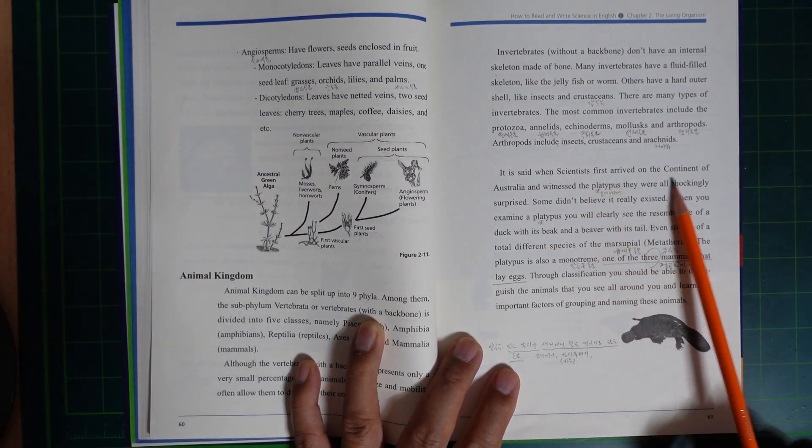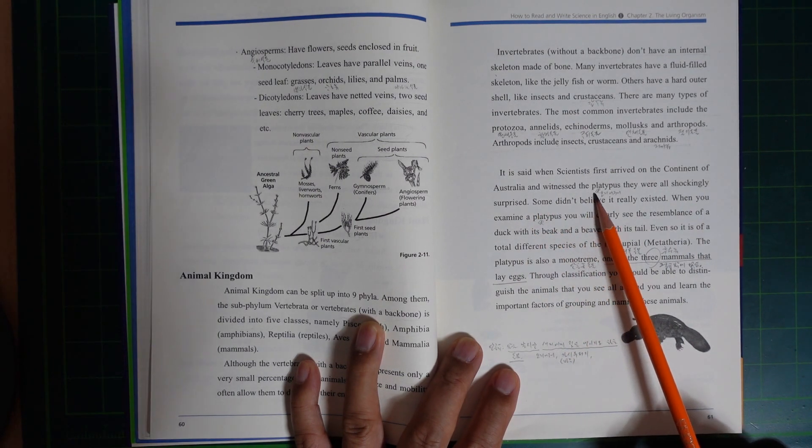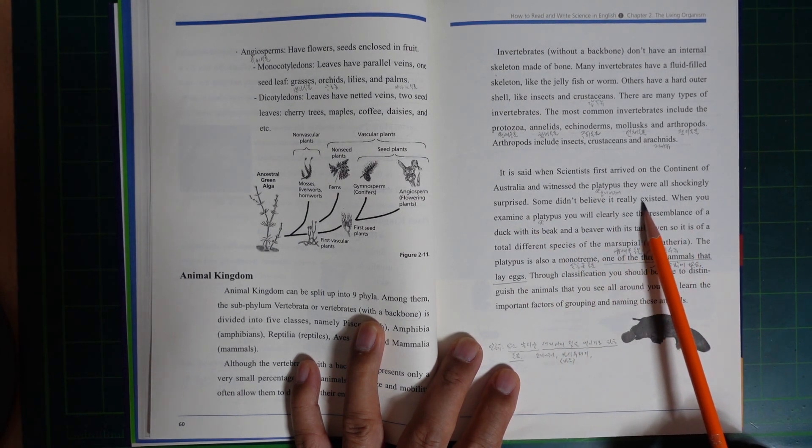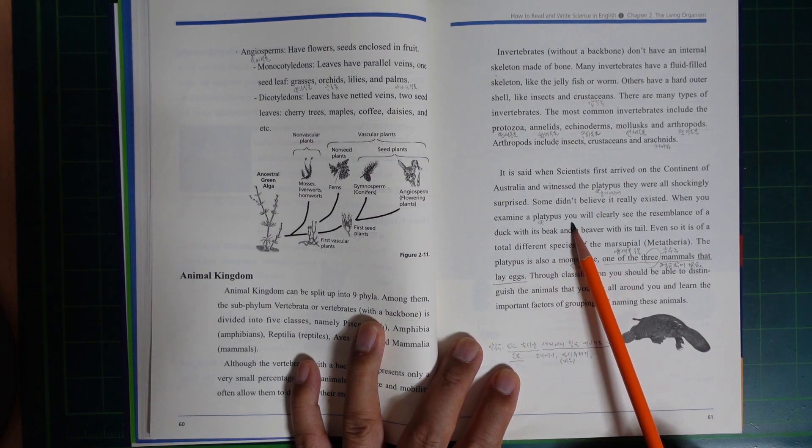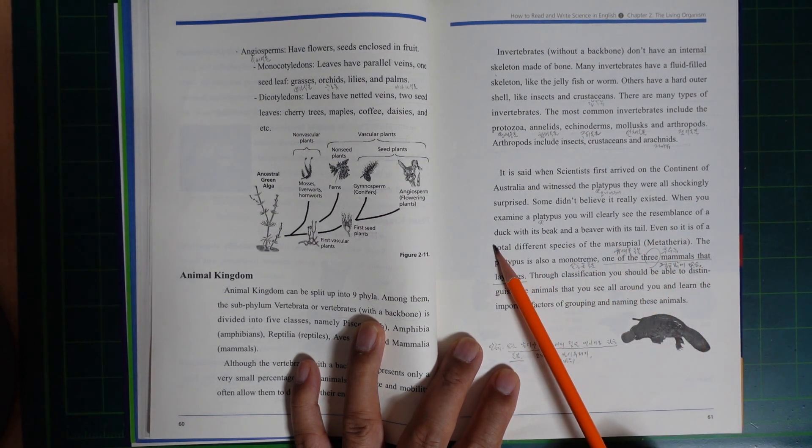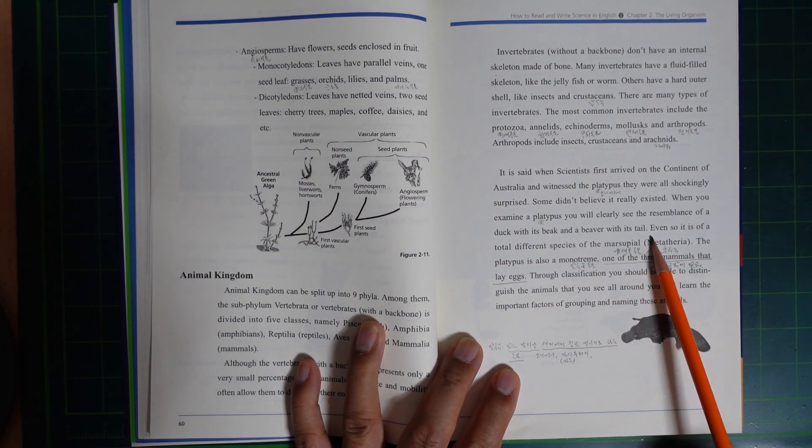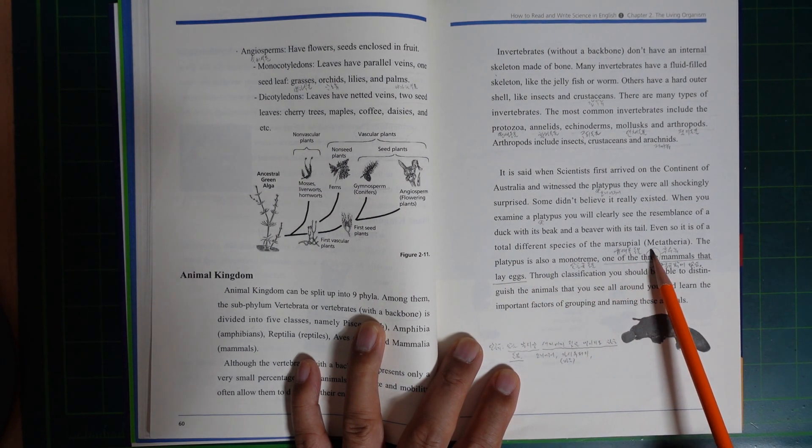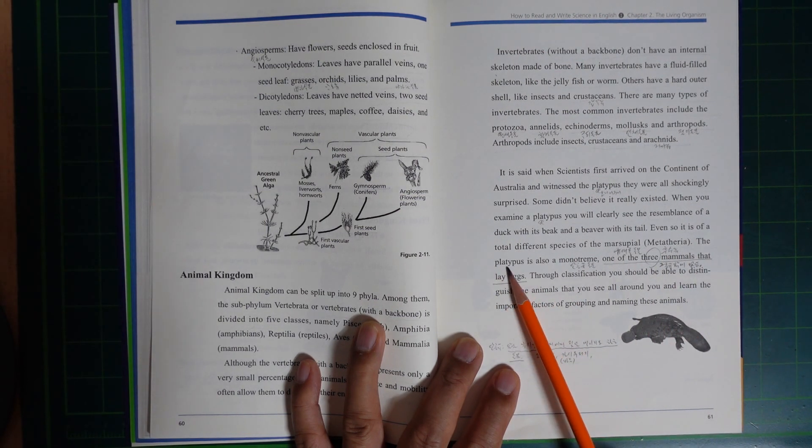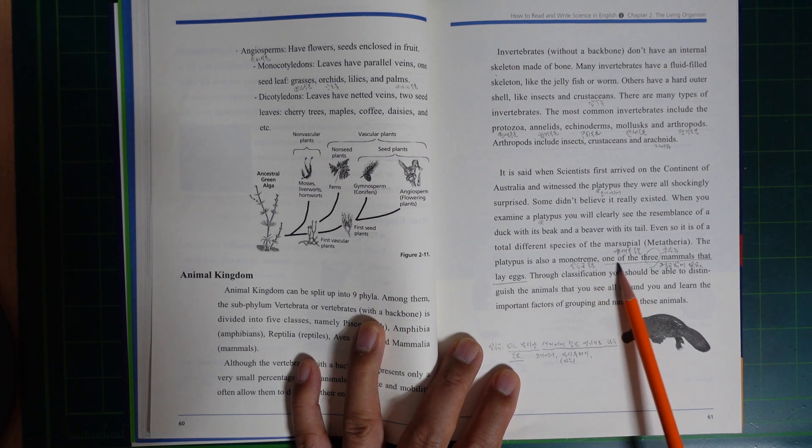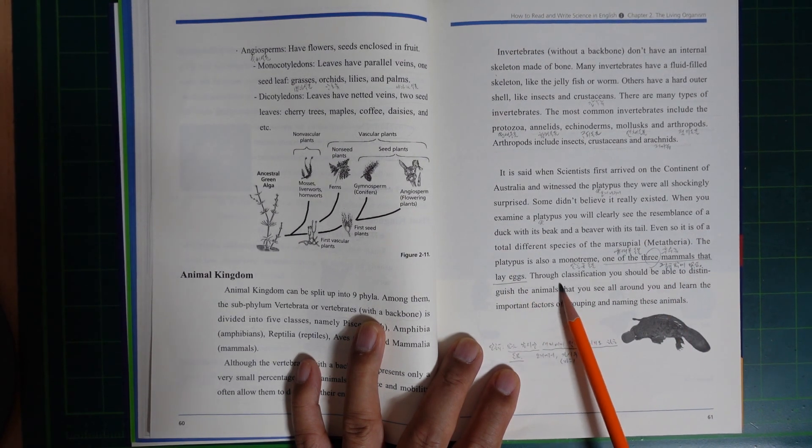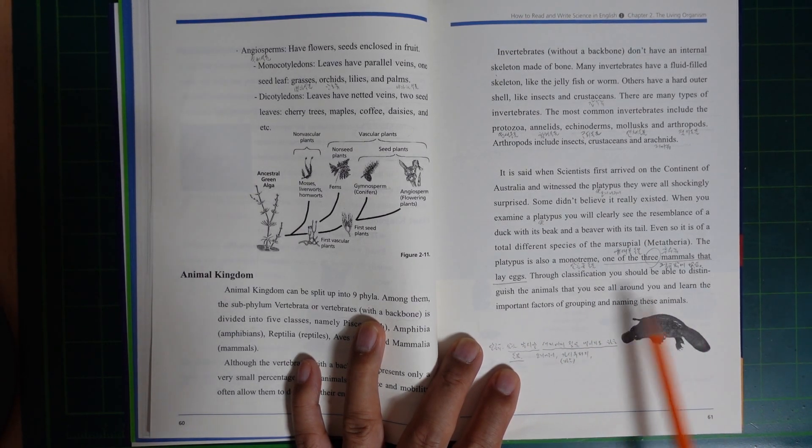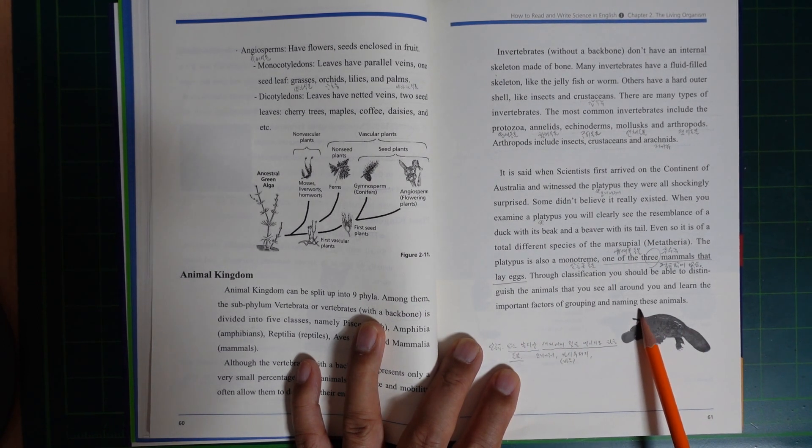When scientists first arrived in Australia and witnessed the platypus, they were all shockingly surprised. Some didn't believe it really existed. When you examine a platypus, you will clearly see the resemblance of a duck in its beak and the beaver in its tail. Even so, it is of a totally different species, Monotremata. The platypus is also a monotreme, one of the three mammals that lay eggs. Through classification, you should be able to distinguish animals you see all around you and learn the importance of grouping and naming these animals.